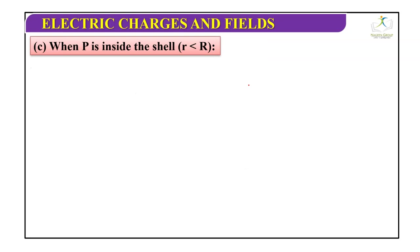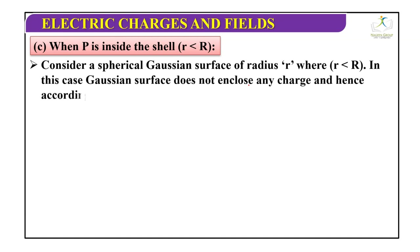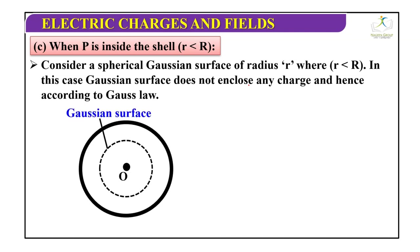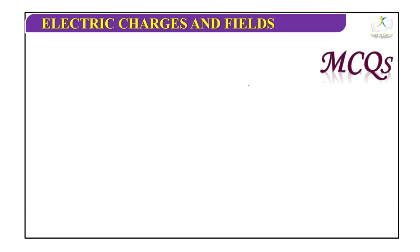When point P is inside the shell, r is less than capital R. Consider a spherical Gaussian surface where r is less than R. In this case, the Gaussian surface does not enclose any charge. Hence, according to Gauss law, E into 4 pi r square equals 0 divided by epsilon naught. Therefore E equals zero. The field inside the spherical shell is zero because there is no charge enclosed.